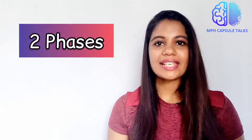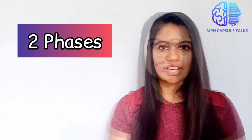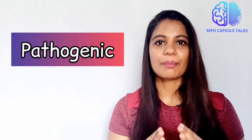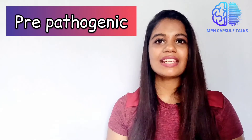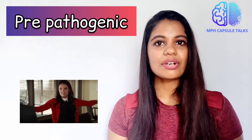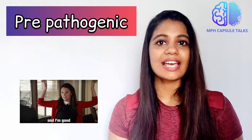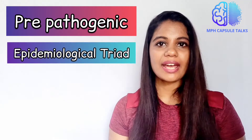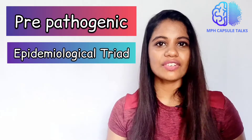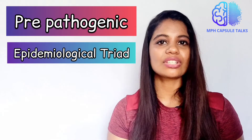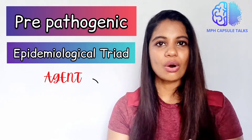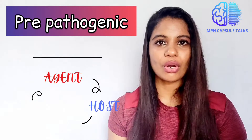There are two phases in the natural history of disease. First is the pre-pathogenic phase, second is the pathogenic phase. In the pre-pathogenic phase, the man is not yet diseased but the agent that contributes to the disease is present in the environment. The epidemiological triad explains that the causation of disease is due to the interaction between agent, host, and environment.